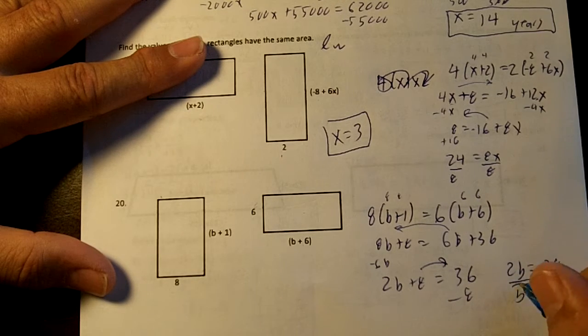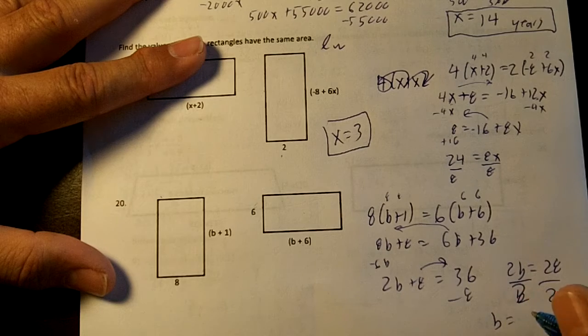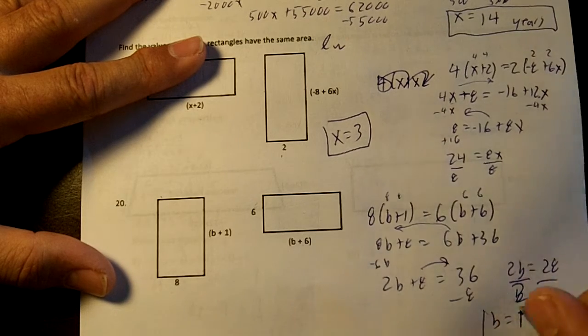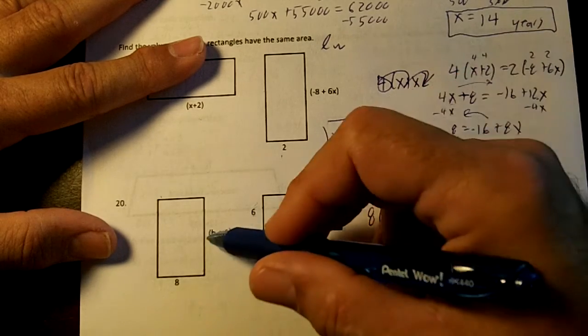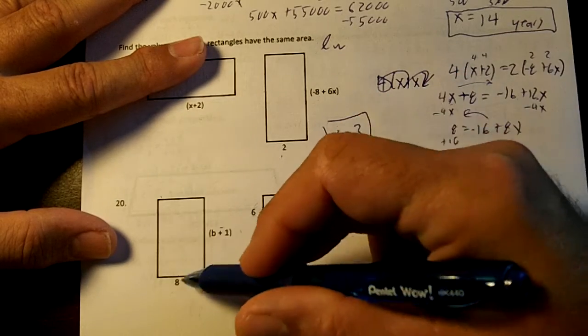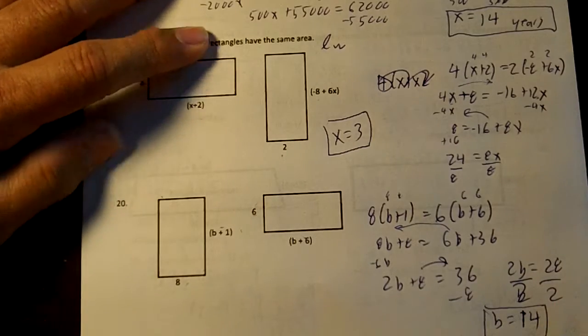Divide by 2. And b is going to end up being 14. If you check it, 14 plus 6 is 20. 20 times 6 is 120. 14 plus 1 is 15. 15 times 8 is 120. So 14 would work.